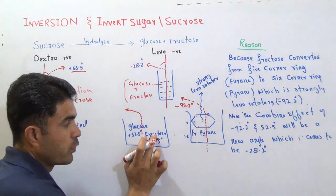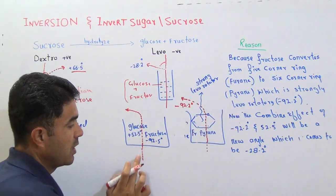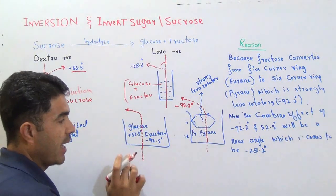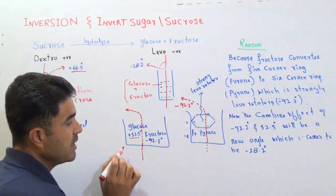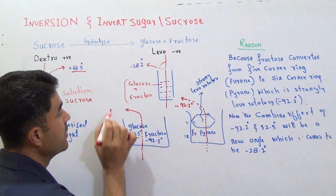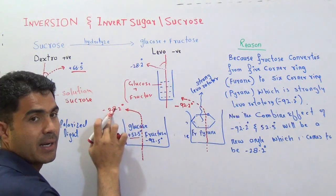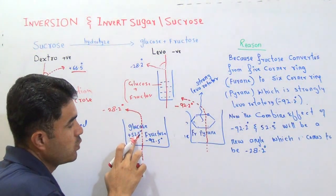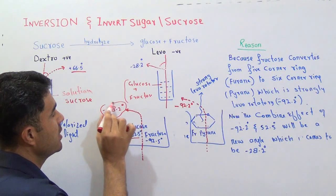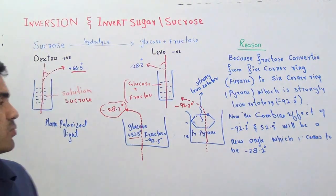When both glucose and fructose are present in the solution, the light will bend towards the left side because fructose is a strong levorotator — it overpowers the dextrorotatory effect of glucose. Glucose contributes +52.5 degrees and fructose pyranose contributes -92.5 degrees, and the combined net angle is -28.2 degrees. This net angle is the result of the combined effect and is what we observe with the product of hydrolysis.